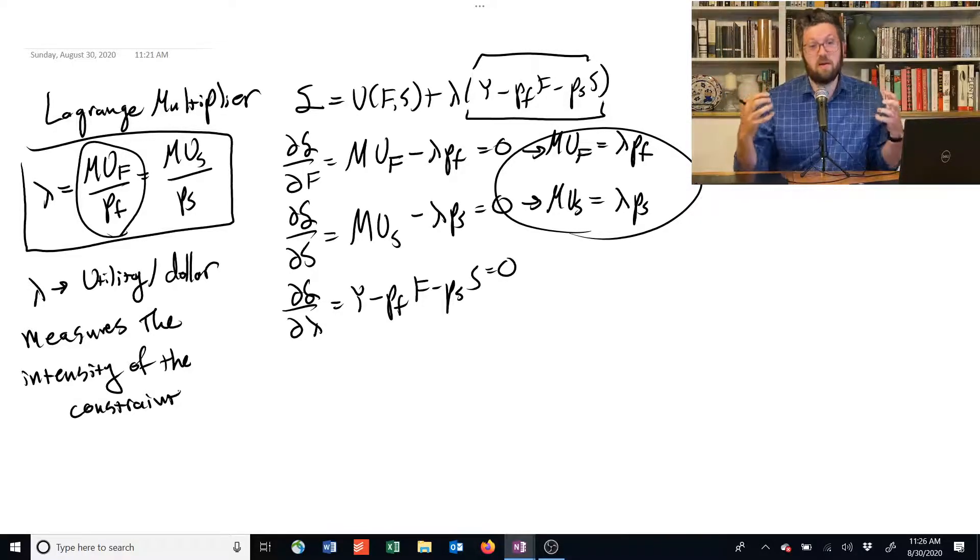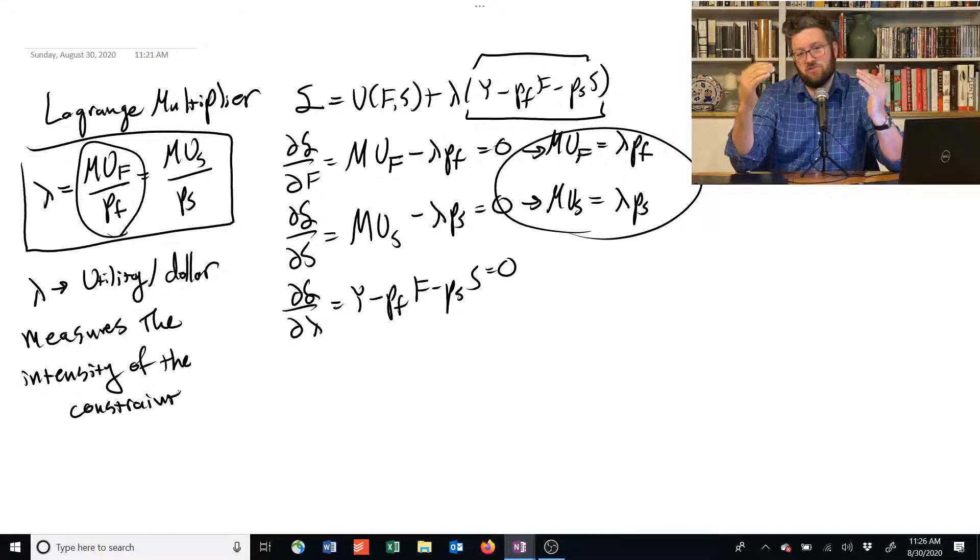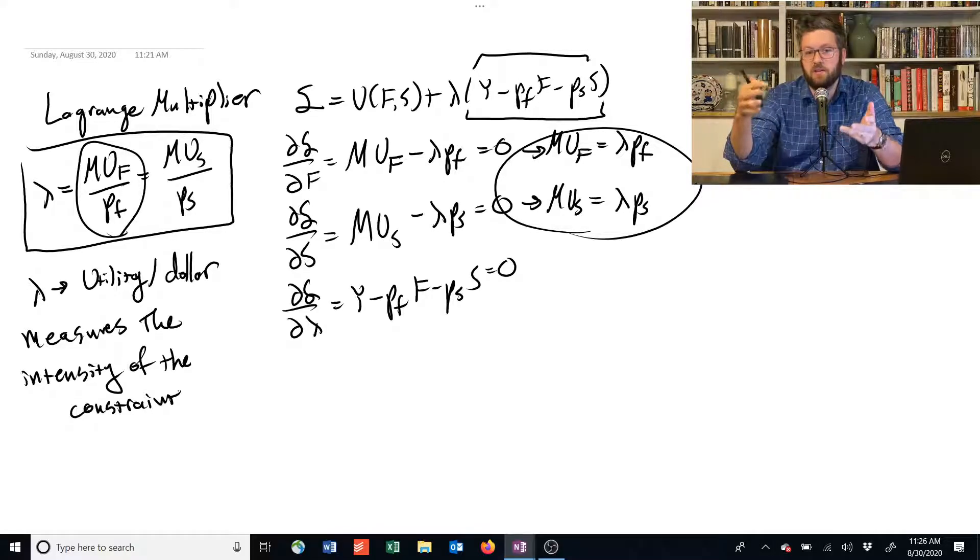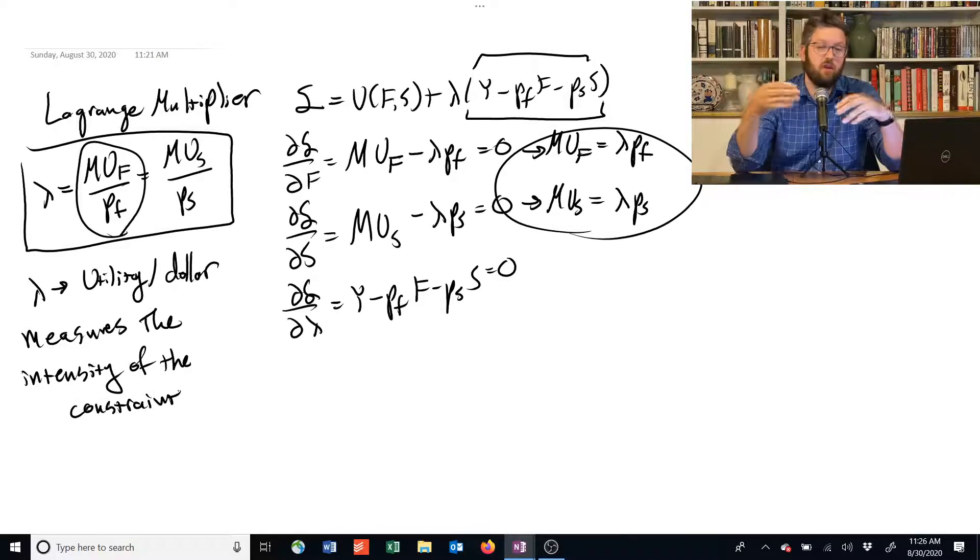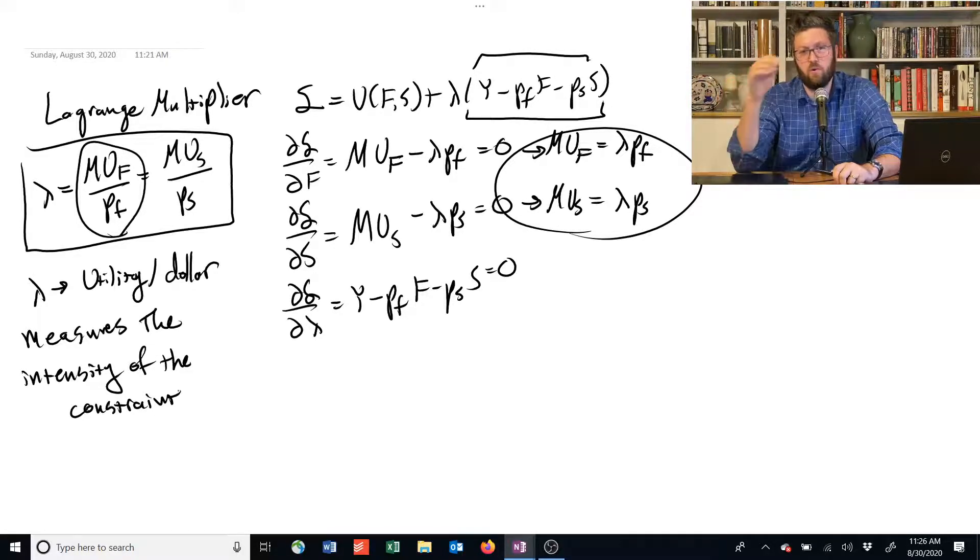So the money is a really binding constraint and you can't get the utility you want because this constraint is really binding you tightly. If the utility actually fell all the way down to zero, that would mean the constraint has become irrelevant. You've already achieved the most utility you could want and extra money doesn't actually get you any extra utility because you already have all the food and shelter you want.